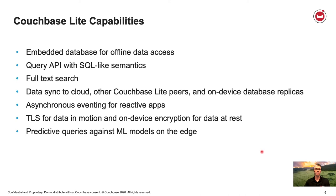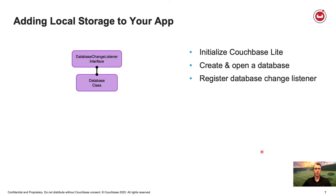From here we'll walk through the different high-level steps to use Couchbase for mobile. The first thing you want to do is add local storage to your app. Looking at the classes and interfaces you'd work with in Couchbase Lite — all of this is through the Database class. First you're going to initialize Couchbase Lite, create and open a database, and then typically register a database change listener on that database instance.